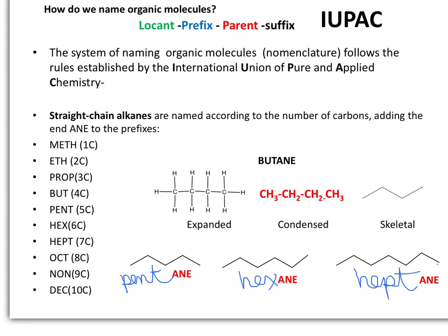When naming any substance by the IUPAC rules, we need to recognize these prefixes. Meth will always indicate one carbon, eth for two carbons, prop for three carbons, but for four carbons, and so on. It's important to know that these prefixes will be used for all different substances.